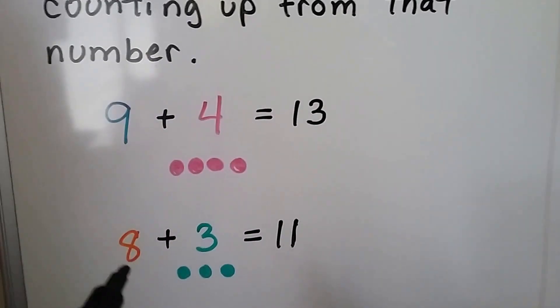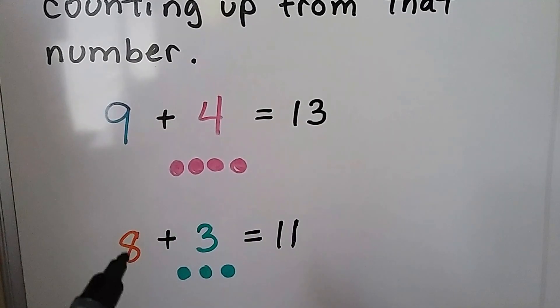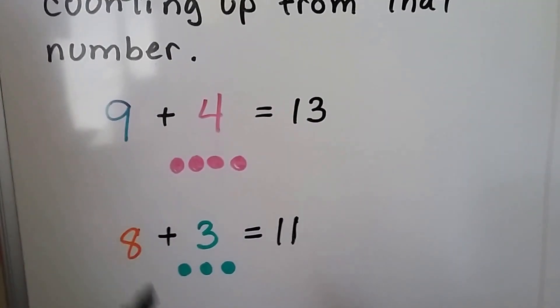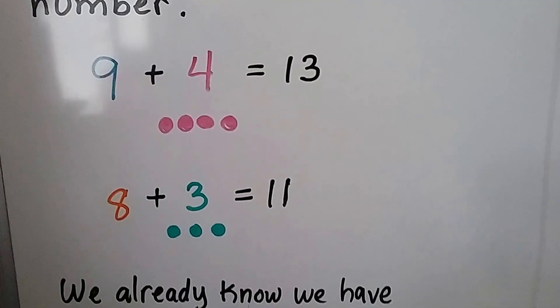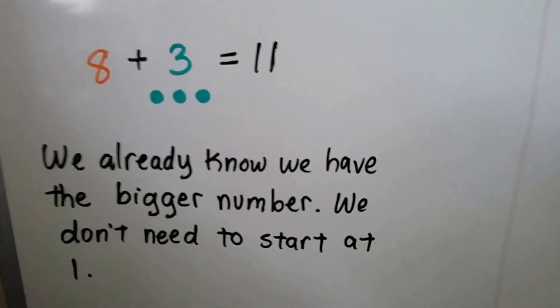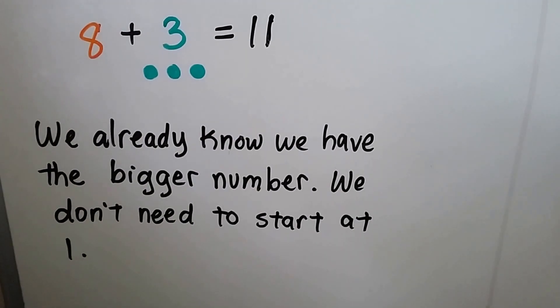We don't start with 1. We don't say 1, 2, 3, 4, 5, 6, 7, 8. We already know we have 8. So we start with the 8. We start with the 9. We start with the larger number. We already know we have the bigger number, so we don't need to start counting at 1.